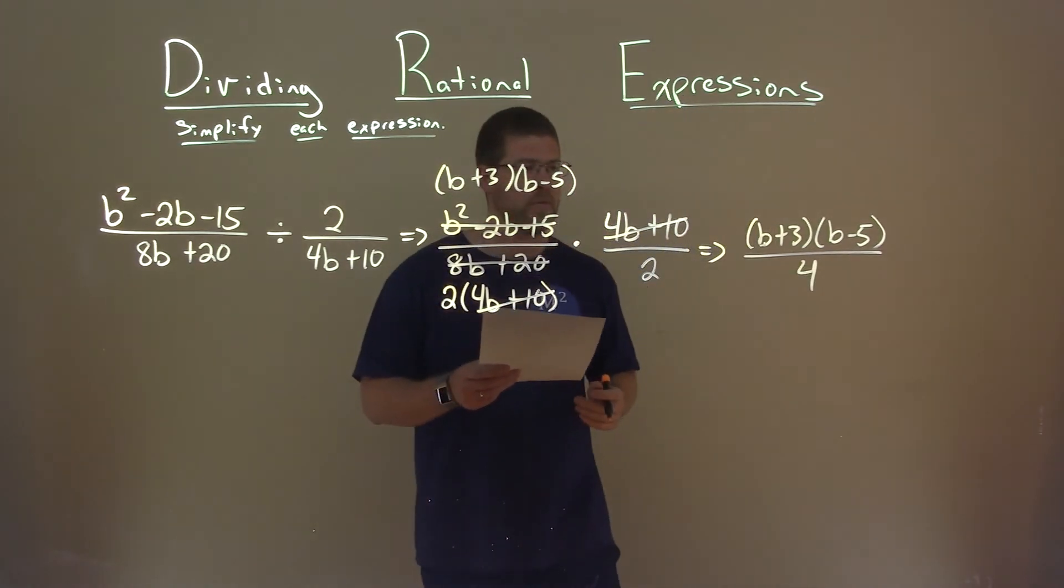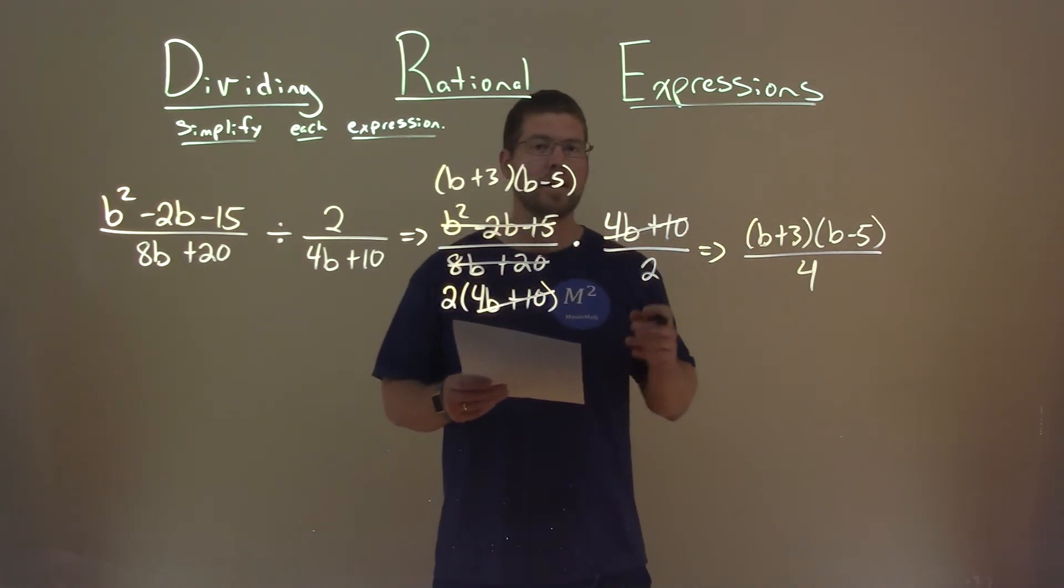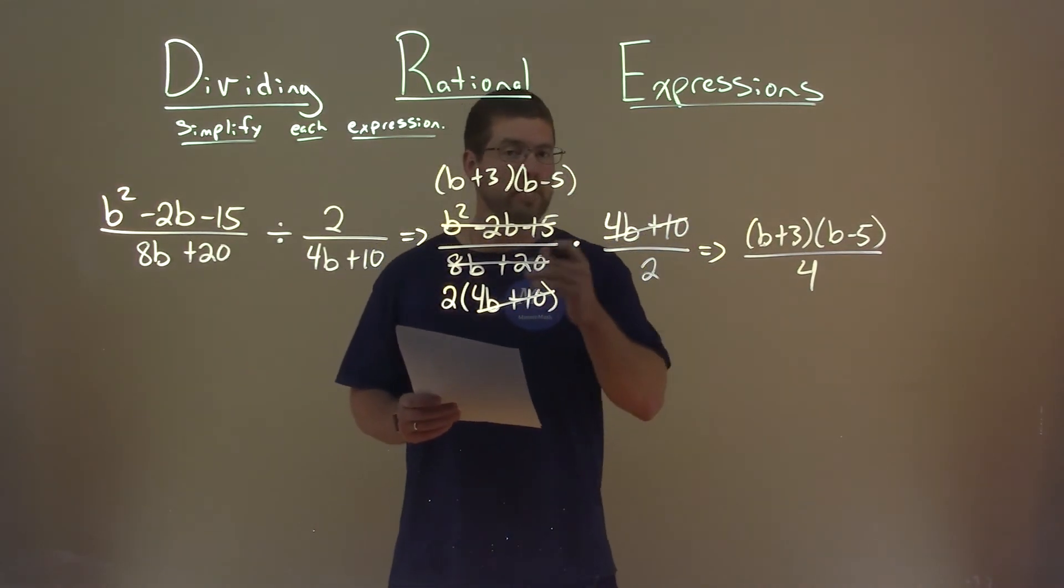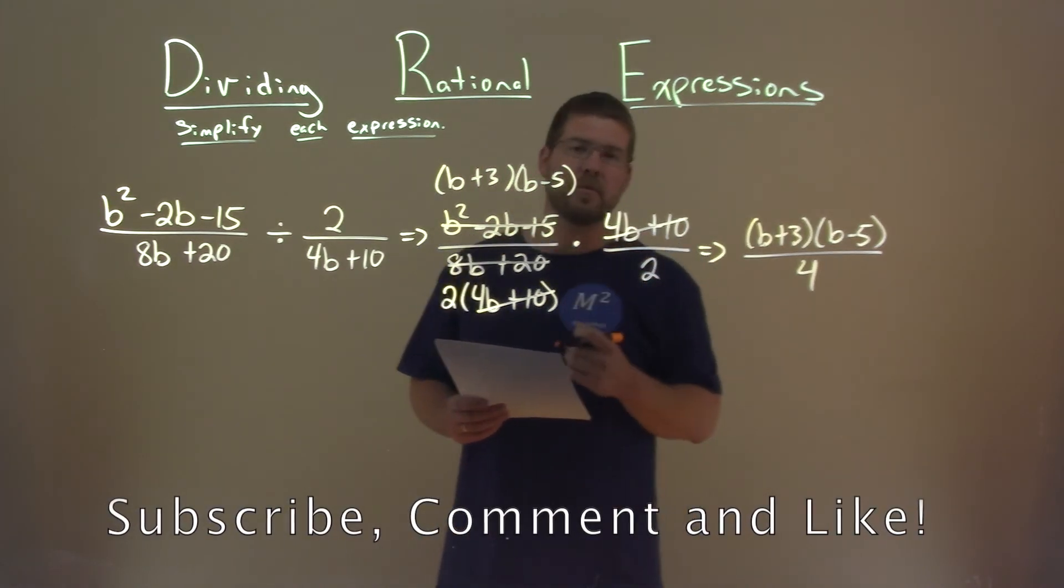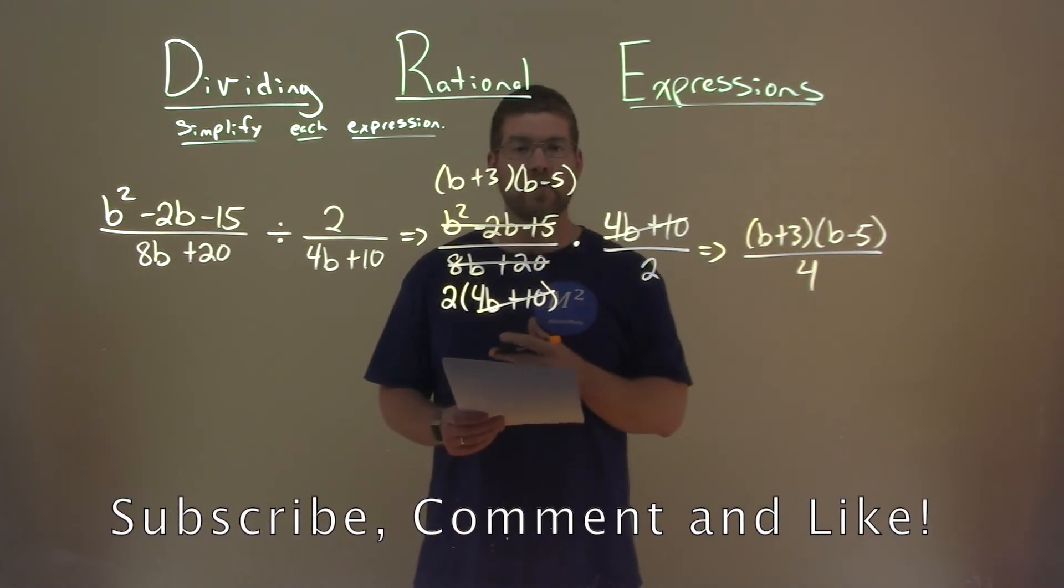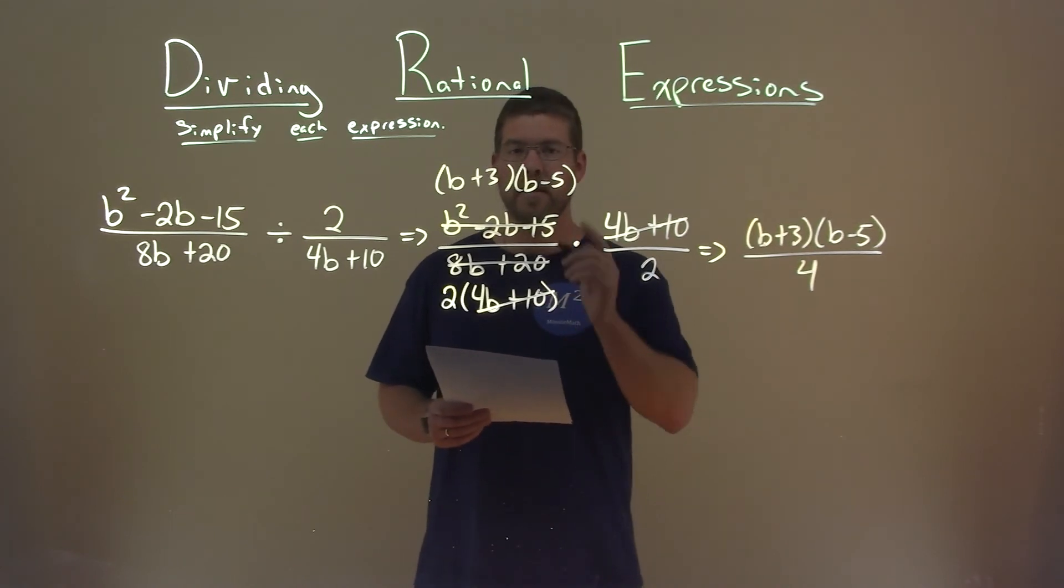And so b plus 3 times b minus 5 divided by 4 is our final answer. I hope this video was helpful, and if it was, please subscribe to this YouTube channel and like this video. This helps us make more free math lessons for you and for everyone else. So as always, thanks for watching.